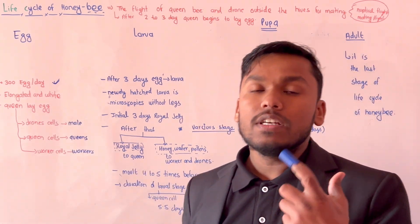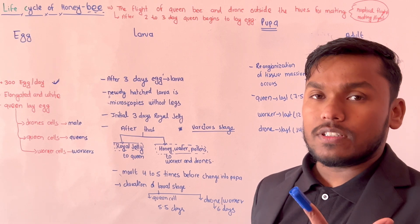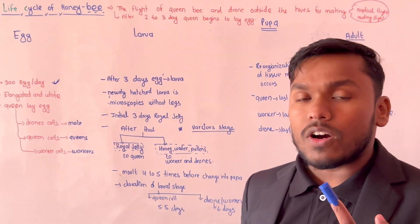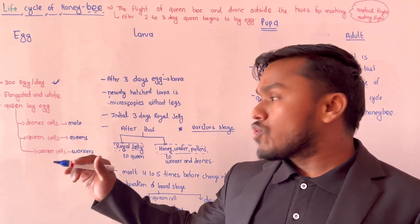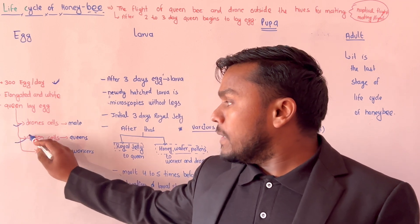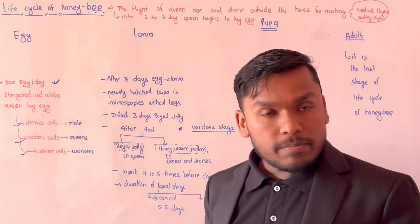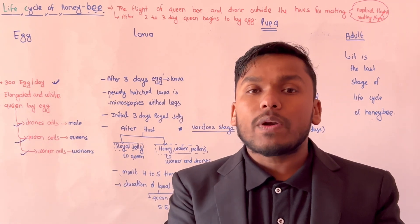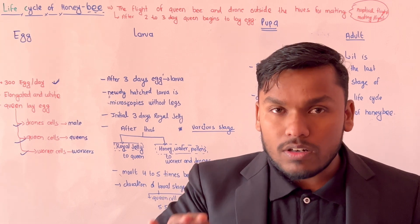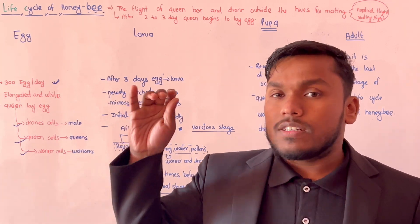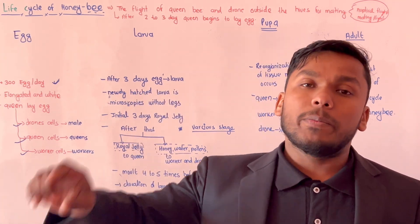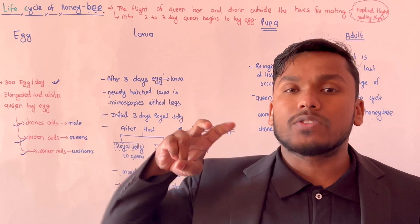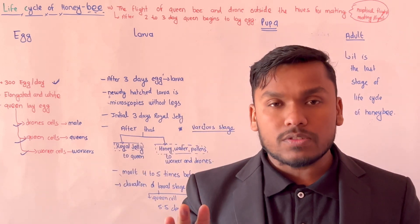The egg is elongated. The egg is elongated, and then drone, queen, and worker eggs are also elongated. How many cells are in a beehive? The cells can be seen as queen cell, drone cell, and worker cell.